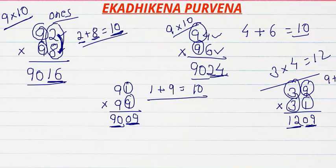Hi students, today we are going to learn Ek Adhi Kena Purwena. Ek Adhi Kena Purwena की मदद से हम लोग किसी भी दो numbers को multiply कर सकते हैं, जिसके one place का digit का sum 10 हो और बाकी के remaining digits same हों। For example, if we want to multiply 92 and 98, the digit at the one place is 2 and 8, and the remaining digits are the same, that is 9 and 9.